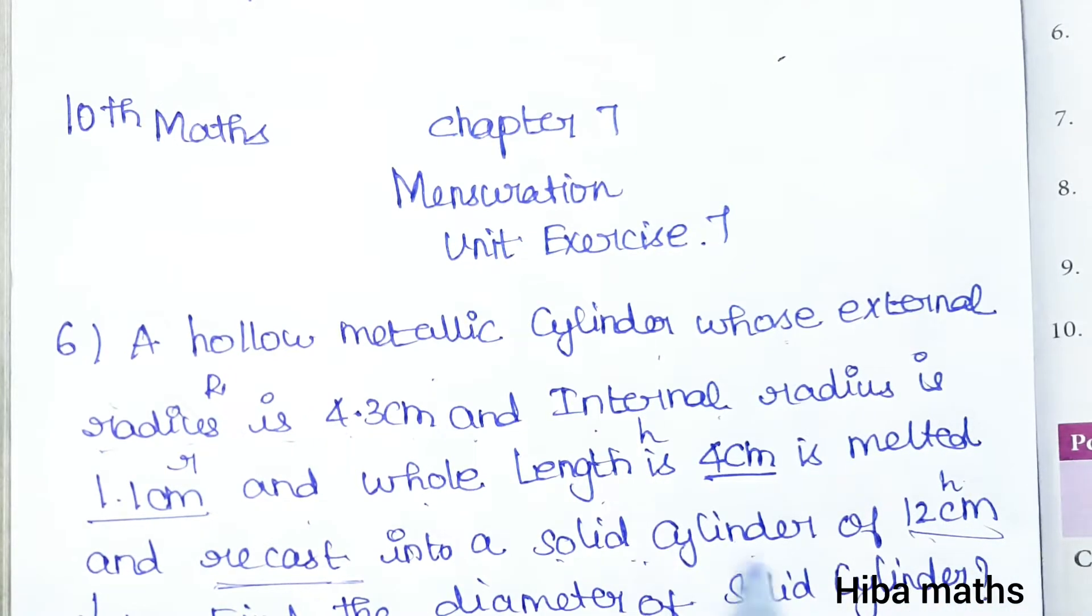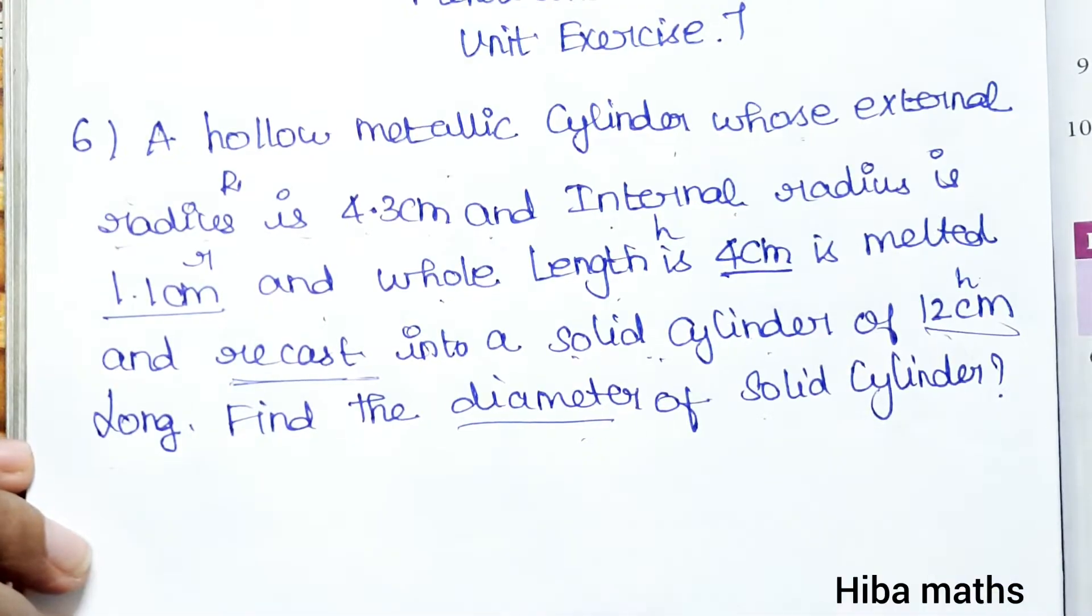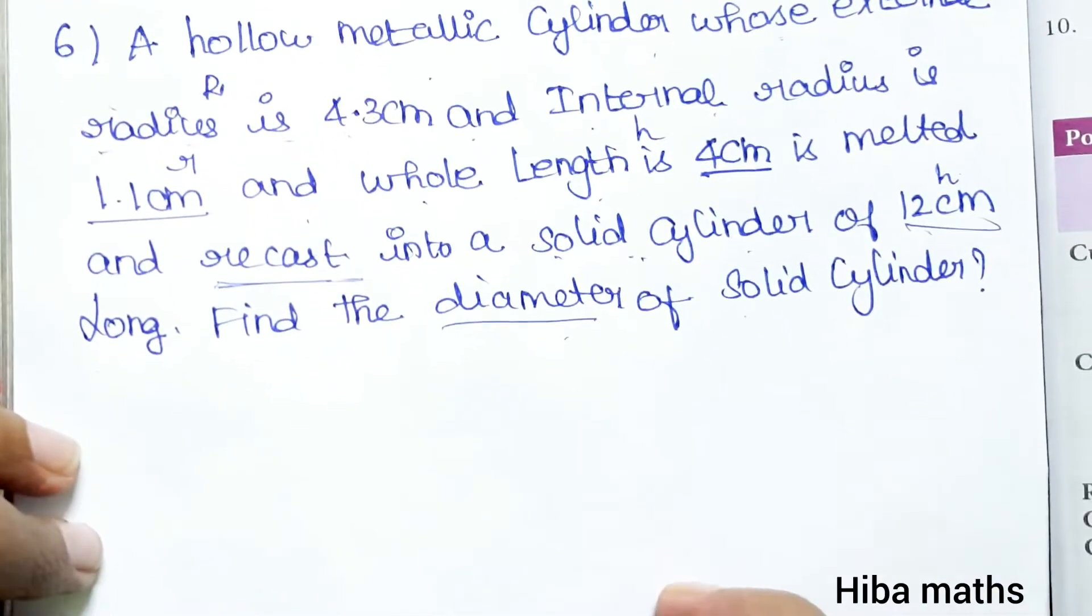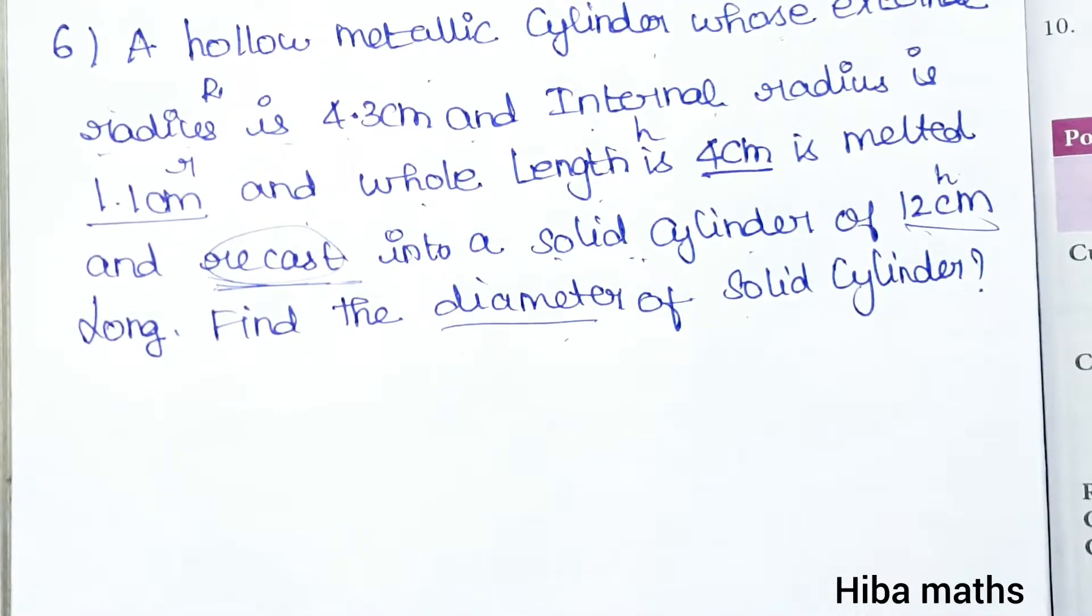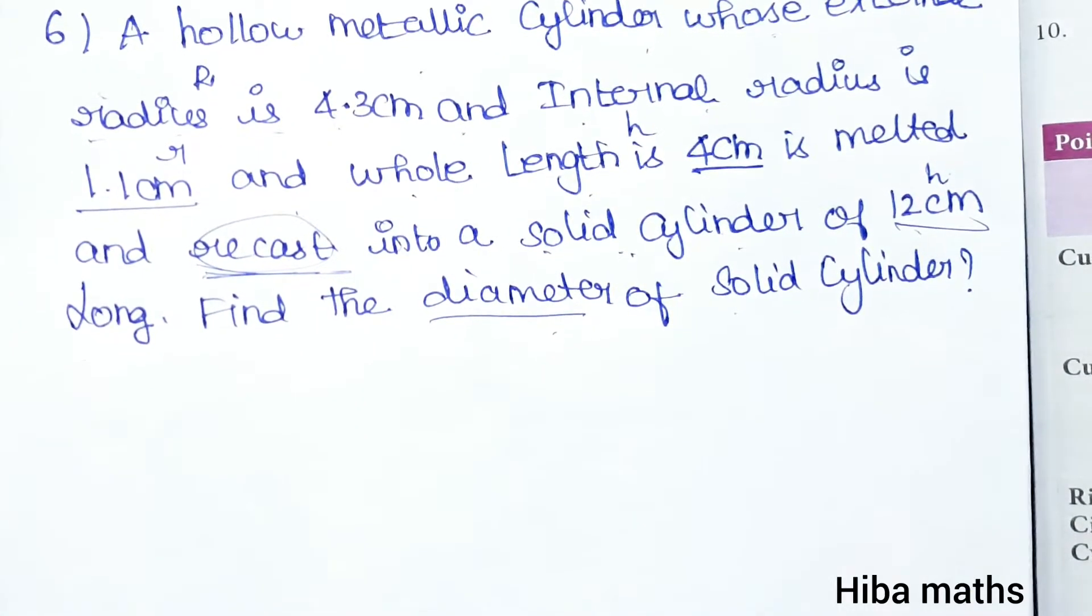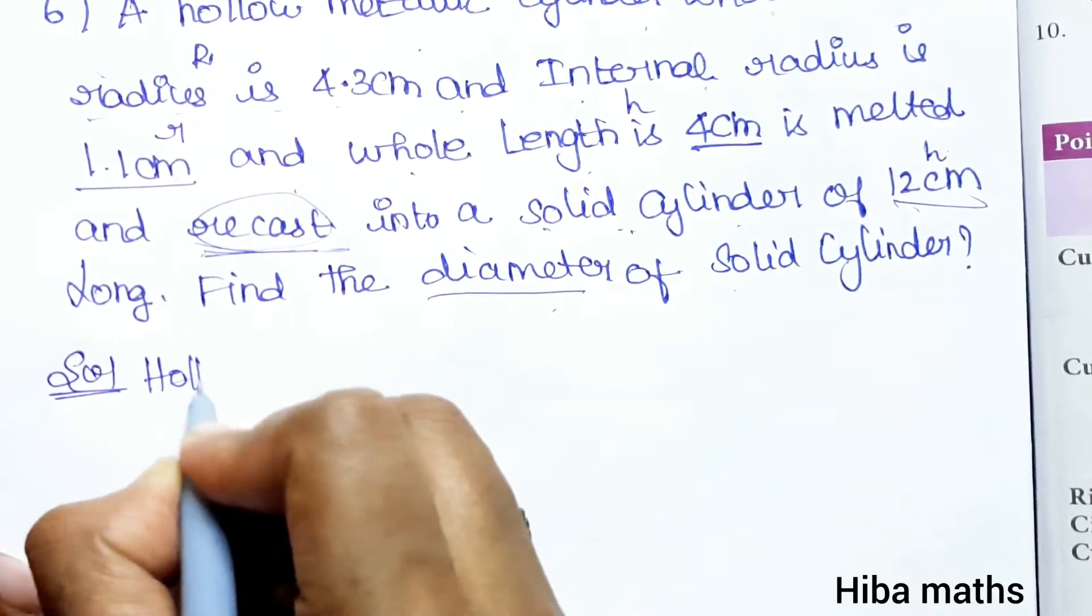This is a solid cylinder. Find the diameter of the solid cylinder. So the diameter is equal when recast, because volume of hollow cylinder must be equal to volume of solid cylinder. So we can start with the hollow cylinder first.